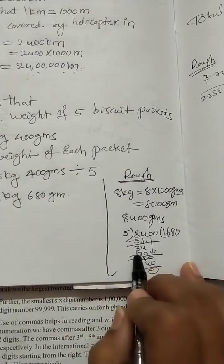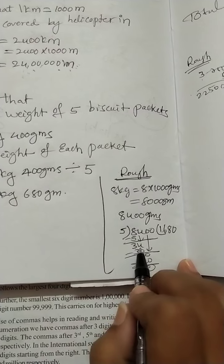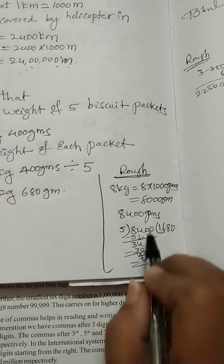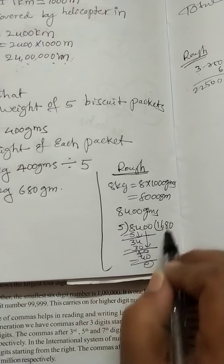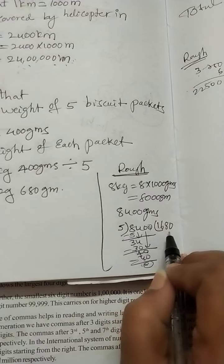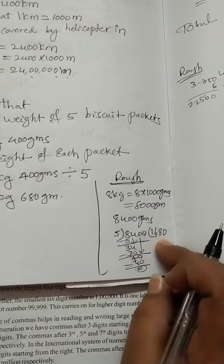5 into 1 is 5, remainder is 3. Carry down 4: 34. 5 into 6 is 30, remainder is 4. Carry down 0: 40. 5 into 8 is 40, remainder 0. Write down the final 0.